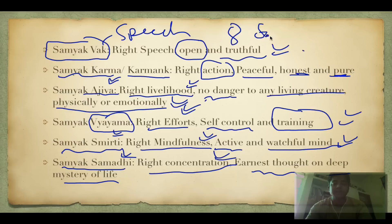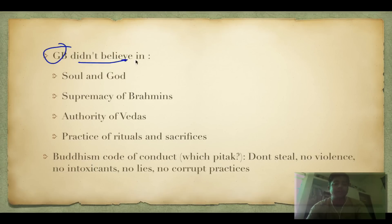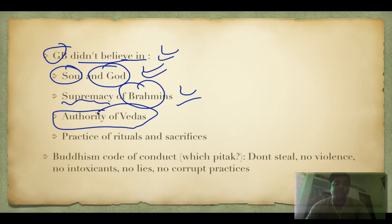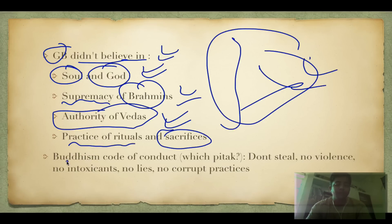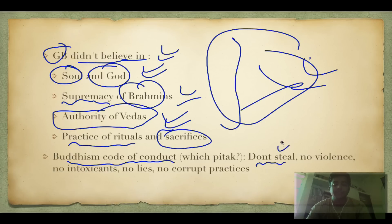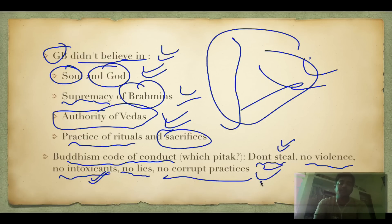Gautam Buddha did not believe in the soul and god, in the supremacy of Brahmins, in the authority of the Vedas, or in the practice of rituals and sacrifices. The Buddhist code of conduct includes: do not steal, do not commit violence, do not go under intoxicants, do not lie, and no corrupt practices.